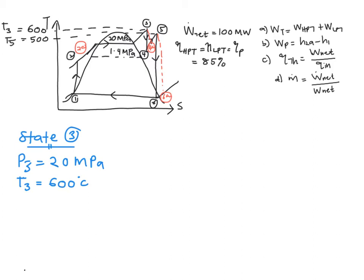Therefore, as mentioned before, when you have two information which is pressure and temperature, you're going to read it directly from your superheated table, which is table A6.